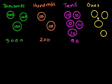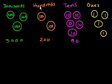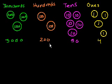And then how many ones do we have? These aren't cans — these are the individual marbles blown up so they look really big. So each of these is 1, 1, 1, 1. You can view this as: the tens place, each circle is 10; the hundreds place, each circle is 100; the thousands place, each circle is 1,000; and the ones place, each circle is 1. So how many ones do we have? 1, 2, 3, 4. We have 4 ones. So our final number is 3,000 plus 200 plus 50 plus 4.